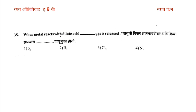When metal reacts with dilute acid, a gas is released. The options are: O2 (oxygen), H2 (hydrogen), Cl2 (chlorine), and N2 (nitrogen). The answer is H2 — hydrogen gas is released when metal reacts with dilute acid.